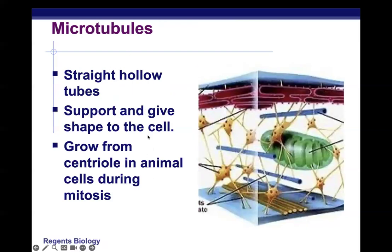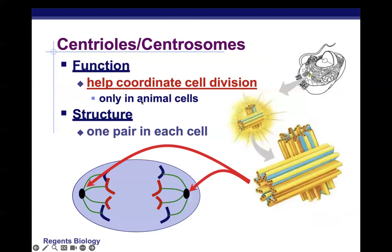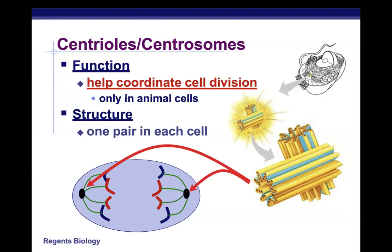Centrioles are where microtubules grow from; they help coordinate cell division and are found only in animal cells. Each cell has one pair, also called centrosomes, and spindle fibers grow from them to help chromosomes separate during mitosis, which we'll cover in the next unit. That's the end of this organelles overview — you'll want to refer back to this presentation for your assignment, knowing these organelles, their jobs, and how they work together to achieve cellular functions.